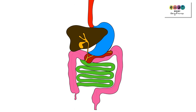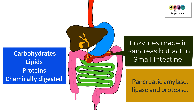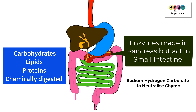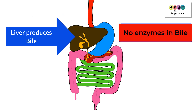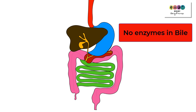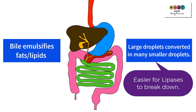The acidic chyme is acted upon in the small intestine by enzymes made in the pancreas — pancreatic amylase, lipase, and protease — so carbohydrates, lipids, and proteins are chemically digested here. The pancreas also produces sodium hydrogen carbonate to neutralize the acidic chyme. It's very important to note that bile contains no enzymes. Bile is stored and concentrated in the gallbladder, then secreted into the small intestine, where it emulsifies fats — converting large fat droplets into many smaller ones, making it easier for lipases to act upon them.